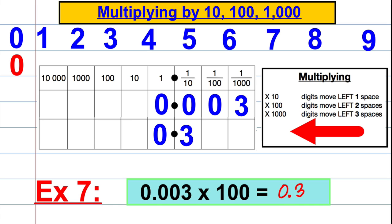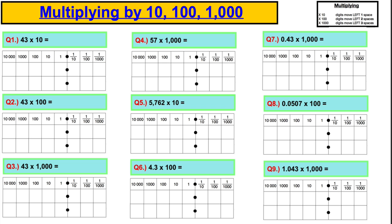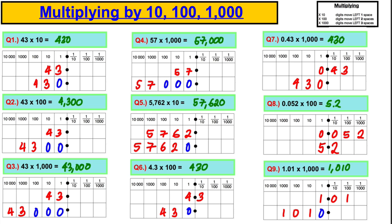Now have a go at these nine questions using the chart: multiplying by 10 — move left by 1; multiplying by 100 — move left by 2; multiplying by 1,000 — move left by 3. In 10 seconds I'll show you the answers. Hopefully that made sense — I showed the original number and the movement of the digits and the place value holders.